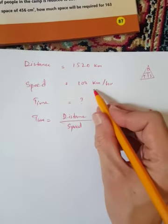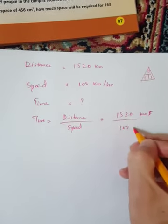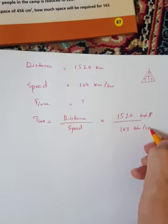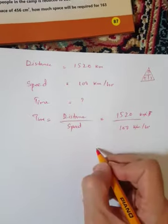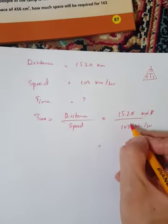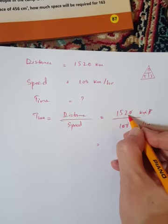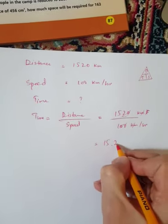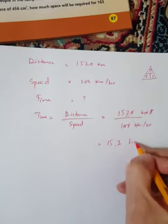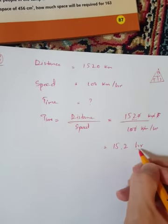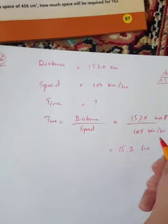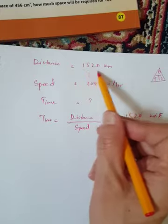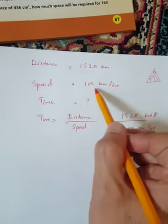Distance is 1,520 kilometers and speed is 100 kilometers per hour. Kilometers cancel out, leaving hours. So 1,520 divided by 100 equals 15.2 hours.